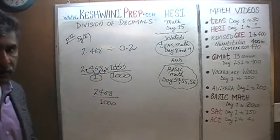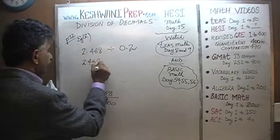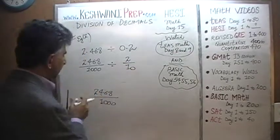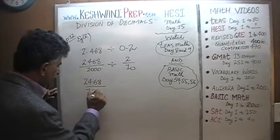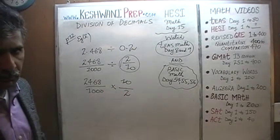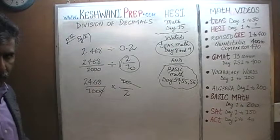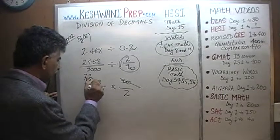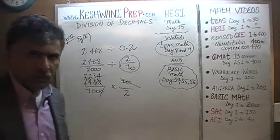So this can be written as 2,468 over 1,000 divided by 2 over 10. We rewrite this as 2,468 over 1,000, times the reciprocal of 2 over 10, which is 10 over 2. Let's divide top and bottom by 10 — this 10 disappears and 1,000 loses one zero, becoming 100. Then divide top and bottom by 2. 2,468 divided by 2 is simply 1,234. Since we divided the top by 2, we divide the bottom by 2 as well — the 2 is gone, leaving 1.